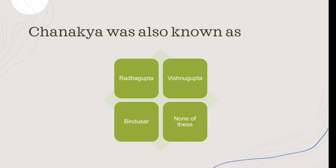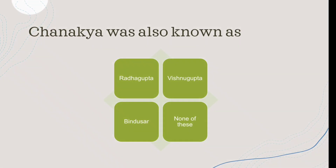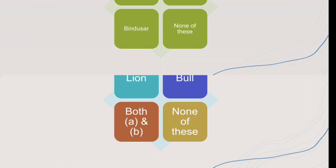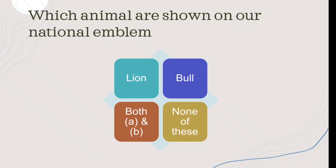Ashoka's inscriptions are known as what? Ashoka's inscriptions are known as the Lion and Bull. So the right answer is both — Lion and Bull.